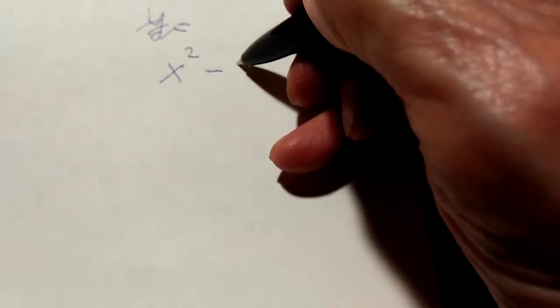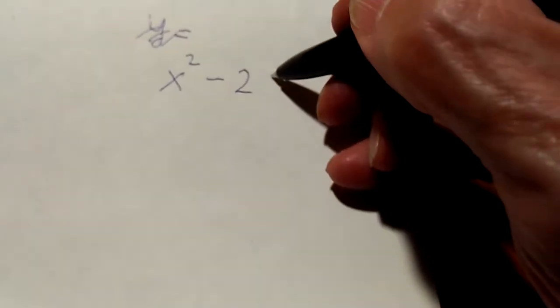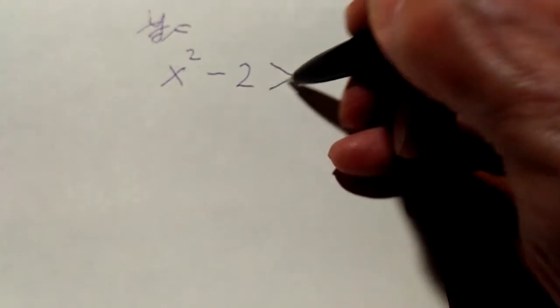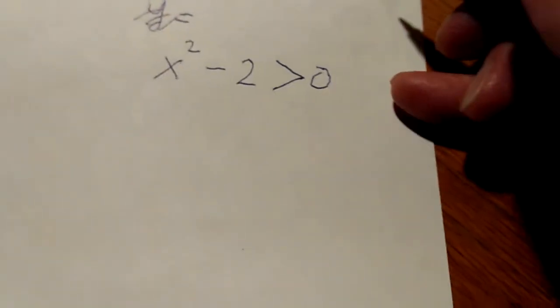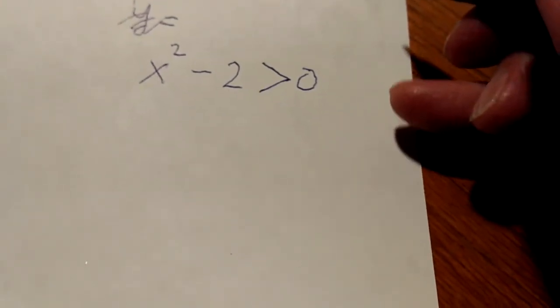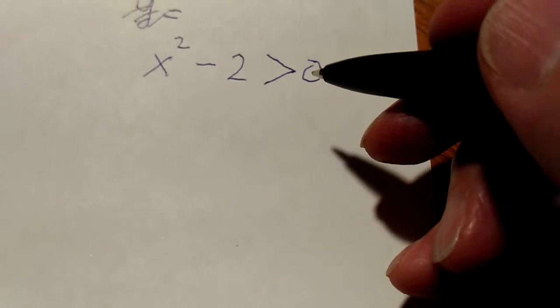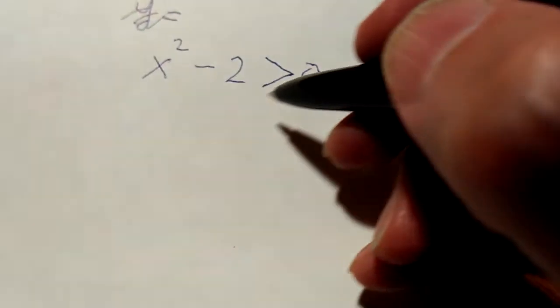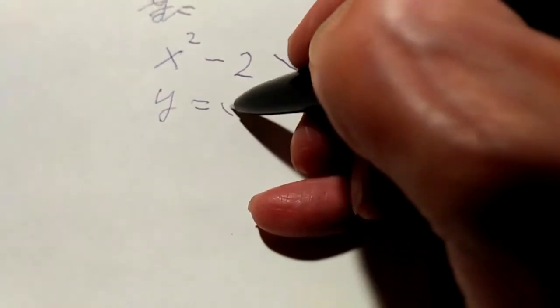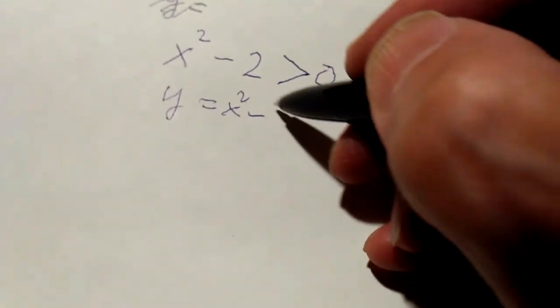So, let's go. How to solve x squared minus 2 is larger than 0? We need to graph the left hand side. Let's say y equals x squared minus 2, so let's graph this.